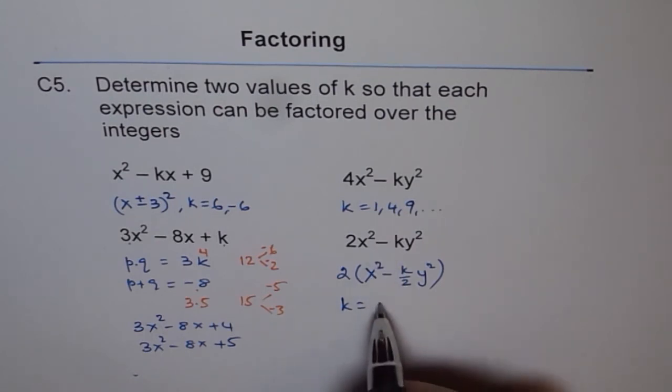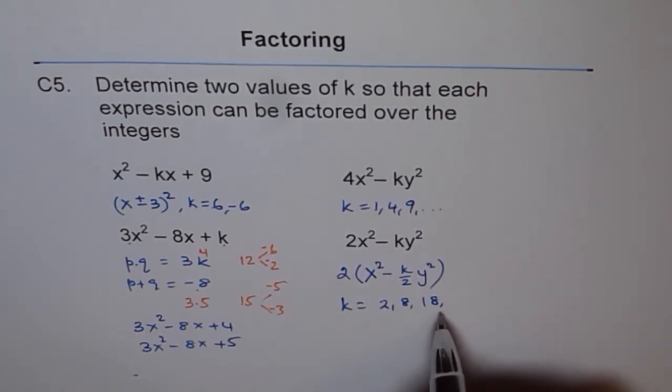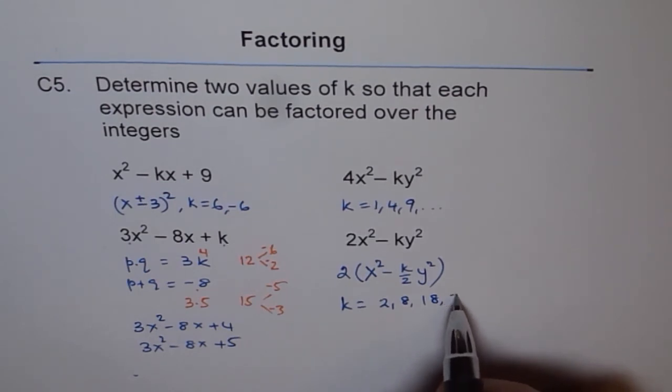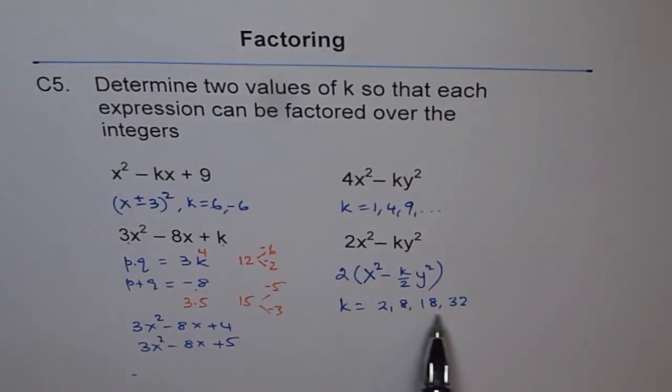So k values could be like 2, 8, 18, like that. Do you understand? And not 16, but 32. Because 32 divided by 2 will be 16, a perfect square. So, these are different ways of finding k.